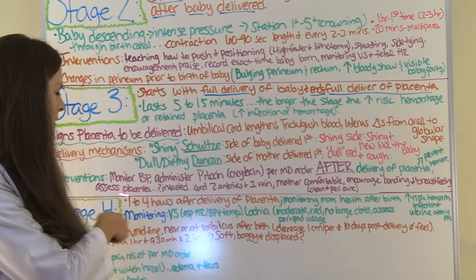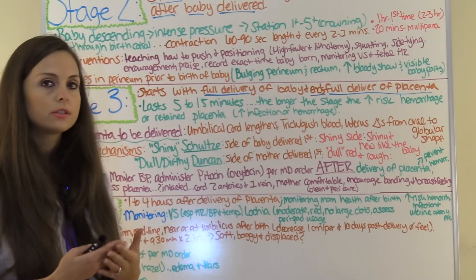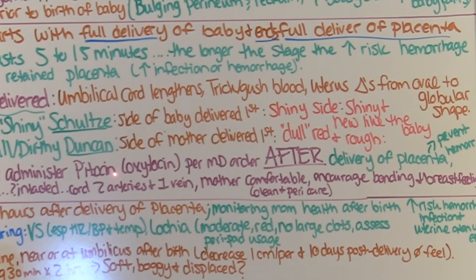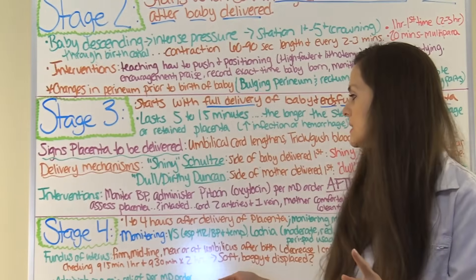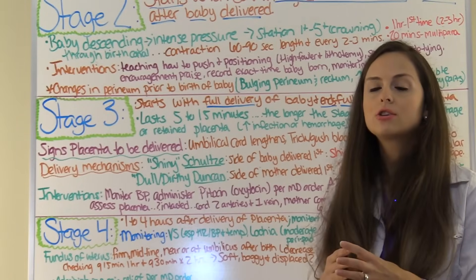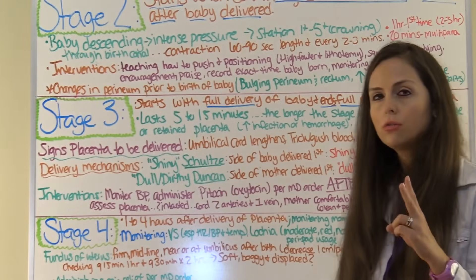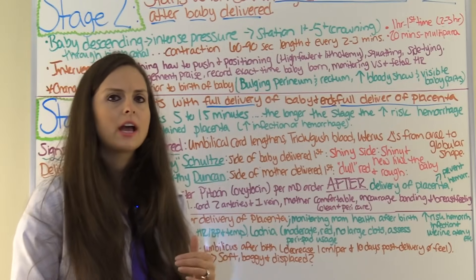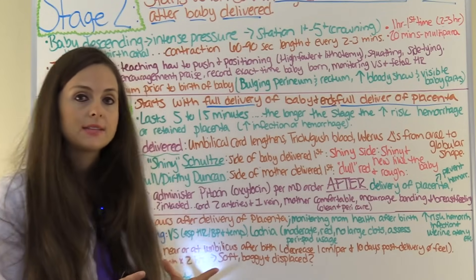Interventions for stage three include monitoring the mother's blood pressure before and after delivery of the placenta due to the risk of hemorrhage. The doctor may order Pitocin after placenta delivery to prevent hemorrhage. Assess the placenta to make sure it is fully intact and nothing is missing or retained in the uterus. Also inspect the umbilical cord, which should have two arteries and one vein. Then make the mother comfortable — clean her up, change sheets, provide peri care, and encourage bonding and breastfeeding with her baby.